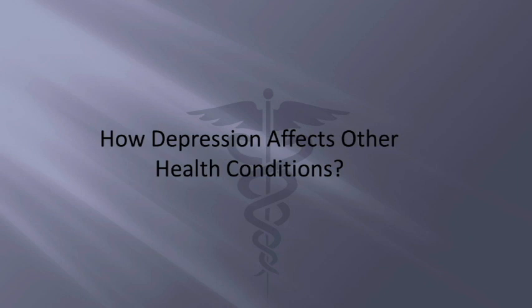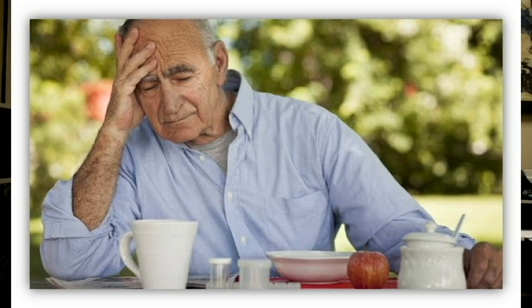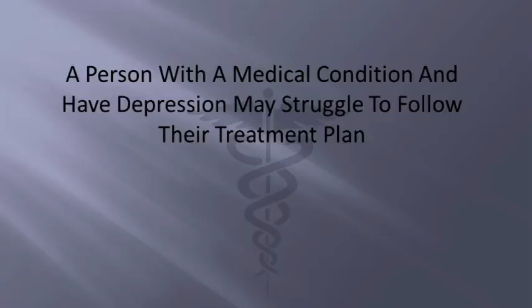How does depression affect other health conditions? People who already have a chronic health condition may find that their symptoms are worse if they develop depression. Individuals with chronic illness may already feel isolated or stressed, and depression often makes these symptoms and feelings worse. A person with depression may also struggle to follow the treatment plan for a chronic illness, which can make the symptoms of depression worse.